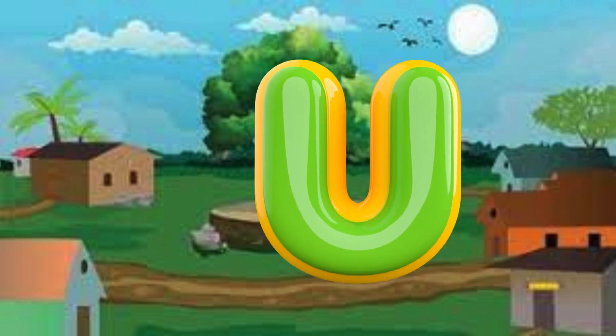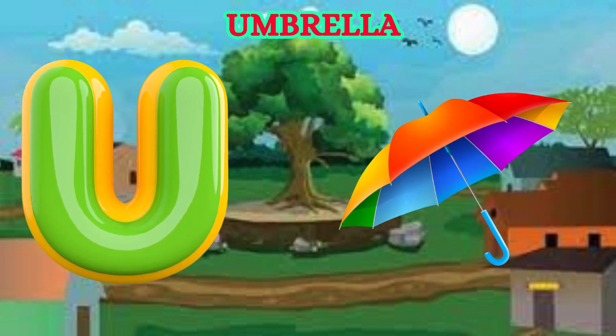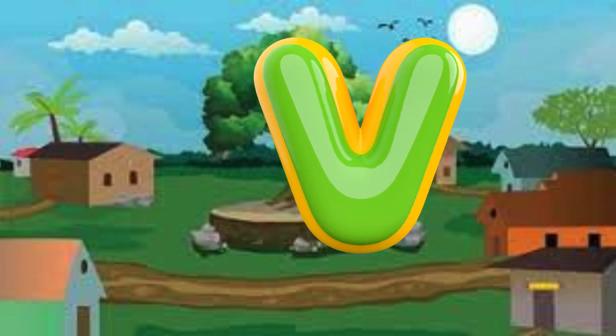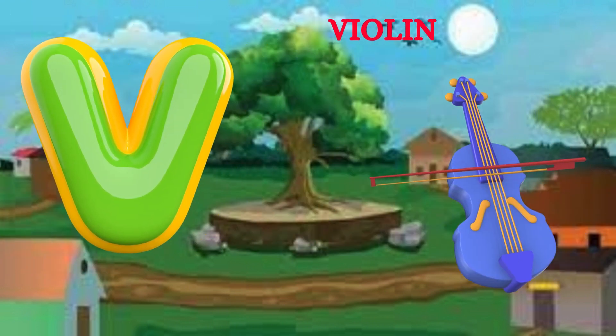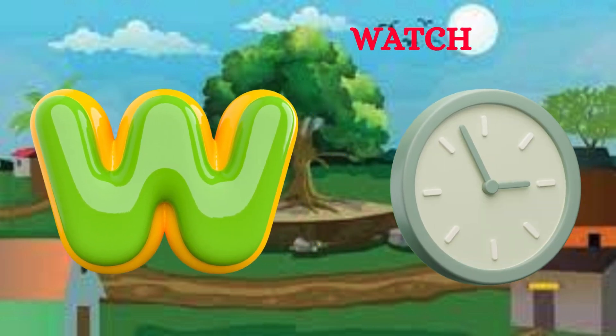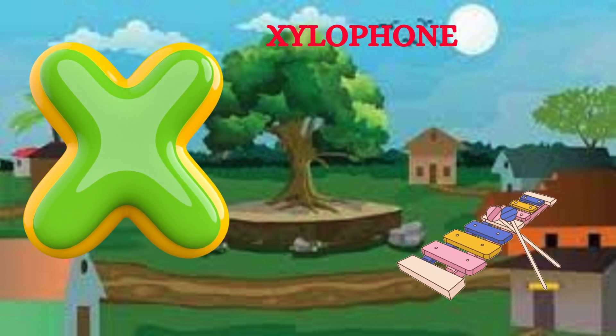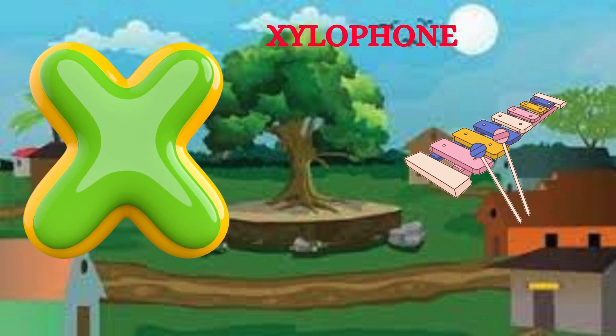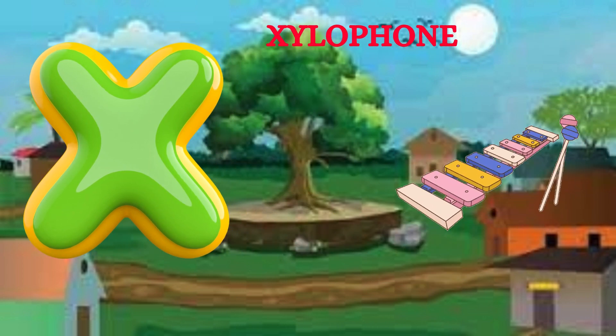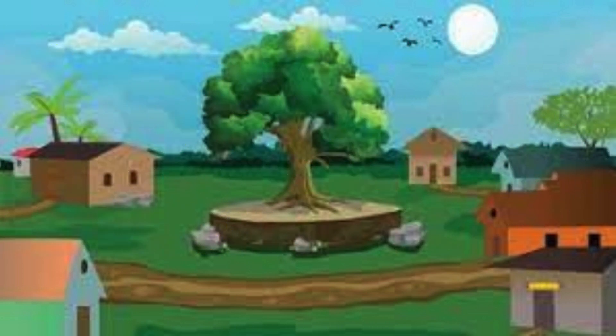U is for Umbrella. U-U-Umbrella. V is for Violin. V-V-Violin. W is for Watch. W-W-Watch. X is for Xylophone. X-X-Xylophone.